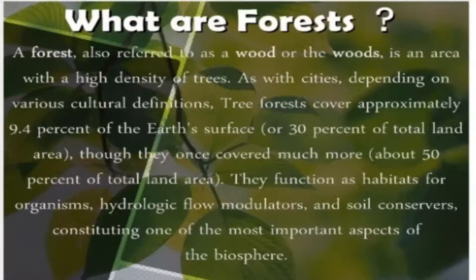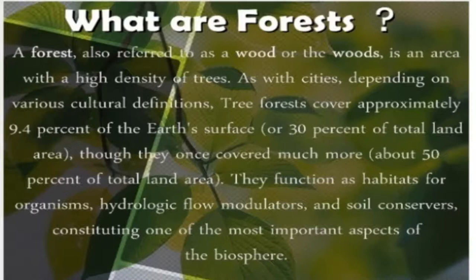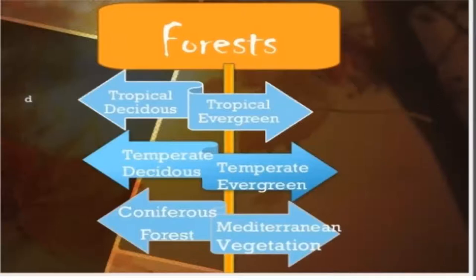What is a forest? A forest refers to as wood or the woods — it is an area with a high density of trees. The area which covers the maximum number of trees, we can refer to it as a forest. To maintain the ecological balance, forest plays a very important role. Many herbivorous animals also depend on the forest. 30% of total land area is covered with forest, and as per the government of every country, 30% forest is mandatory. Now we are going to take the first information about the first category of forest.